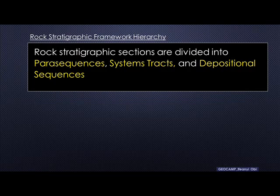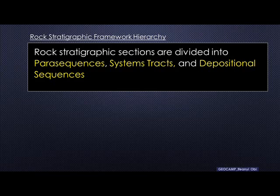Stratigraphic sections are divided into parasequences, systems tracks, and depositional sequences. At the tiniest scale or degree of detail, we call it the parasequence, and that is followed by the systems tracks. The last sections or episodes of these discussions will focus on depositional sequences. The idea is to be able to relate one nomenclature to the other, bearing in mind that these are at different scales and associated with different orders of global sea level change.